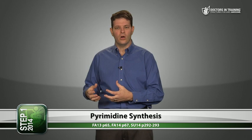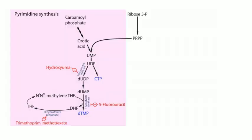Even though purines and pyrimidines are fairly similar, the way our bodies make them is totally different. Even the part of the purine ring that looks like a pyrimidine is made in a completely different way. When synthesizing pyrimidines, you start with a base called orotic acid and then add a sugar. For purine synthesis, you start with the sugar and then add the base.